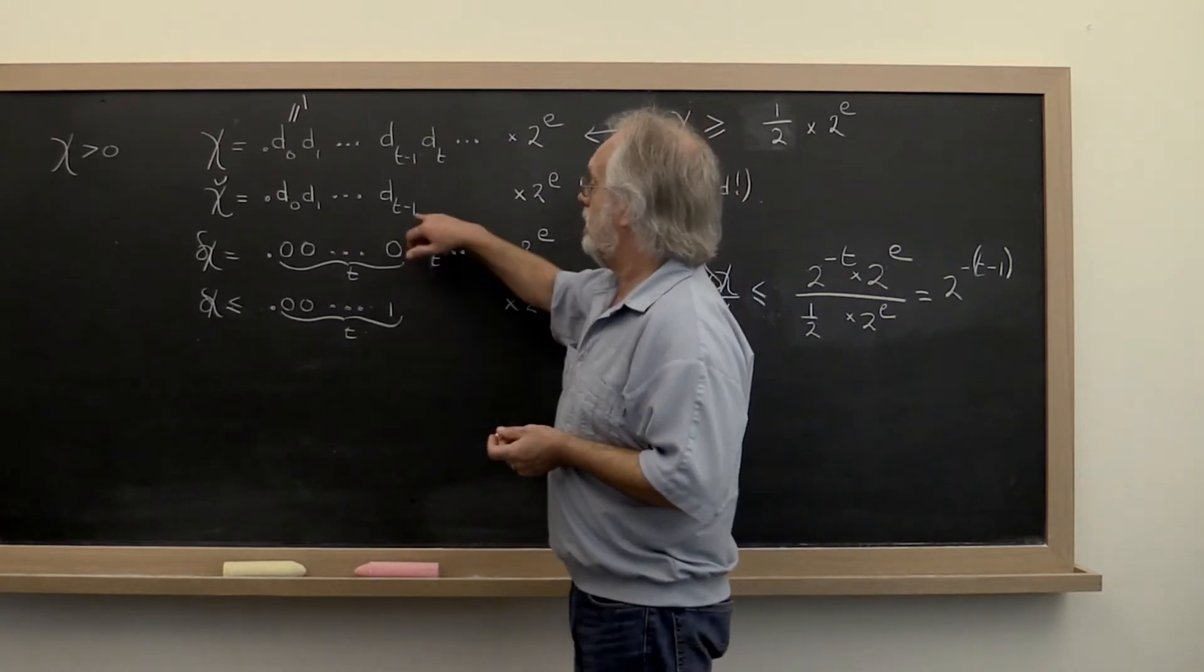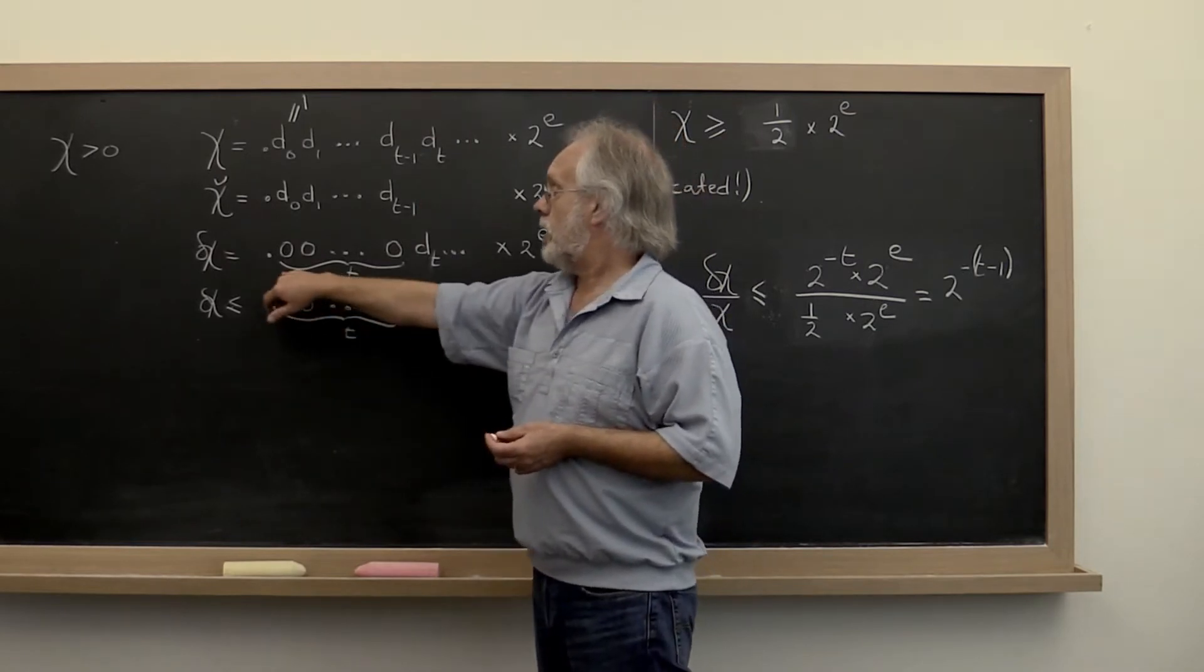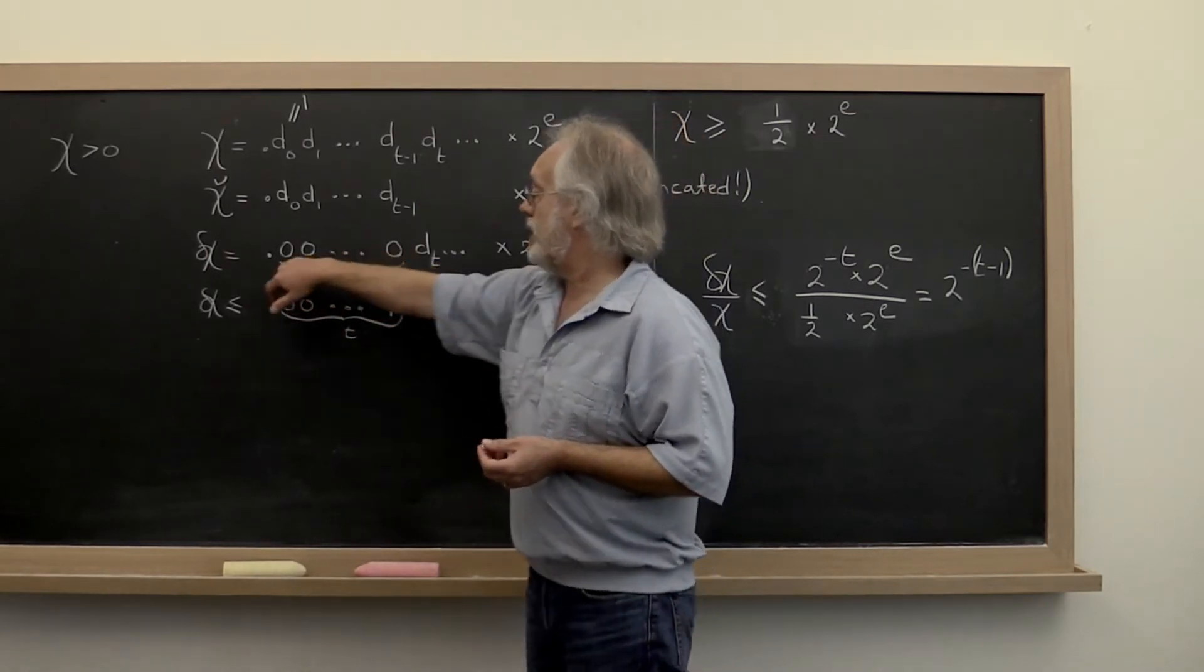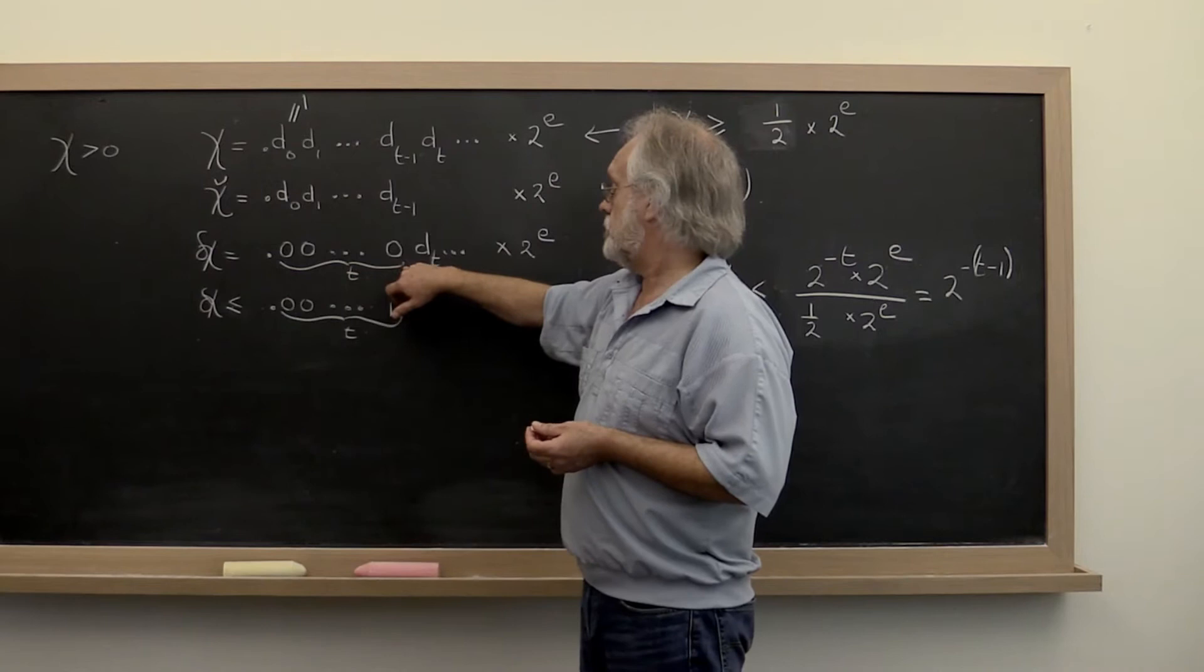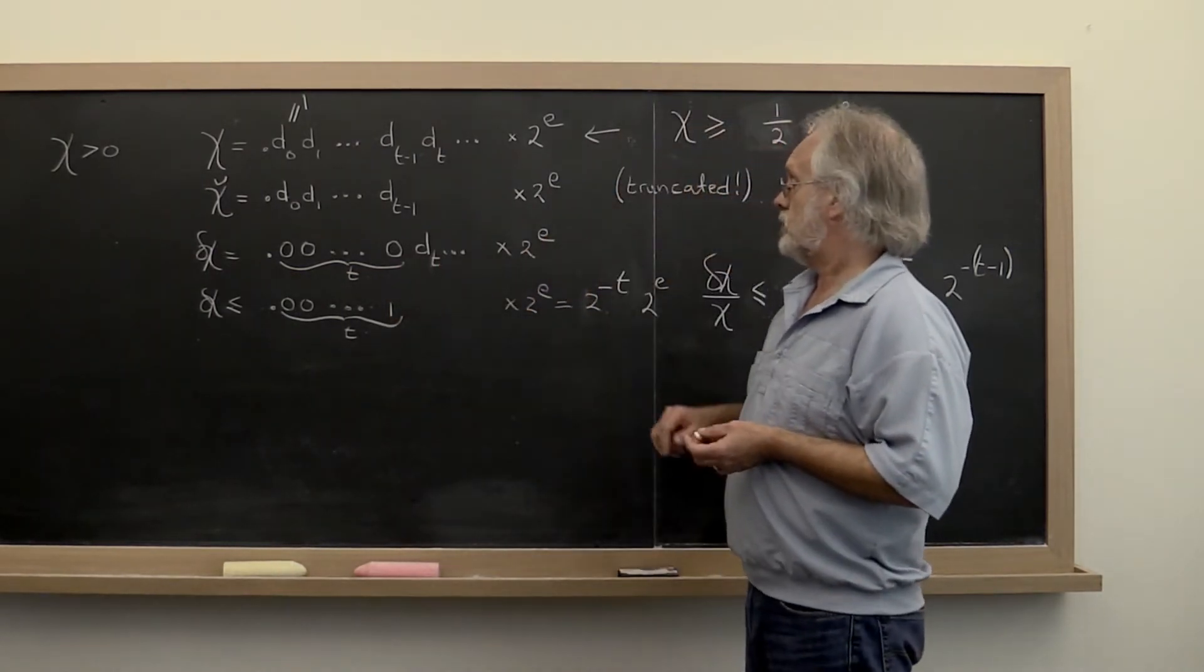Well we can take the floating-point number that we created and subtract off the real number to come up with the difference. And notice that you end up with t zeros and then the rest of the binary digits times 2 to the exponent.